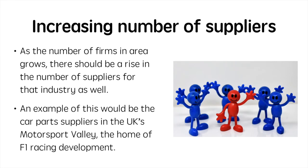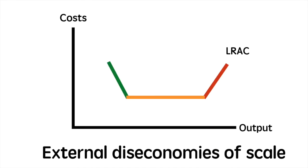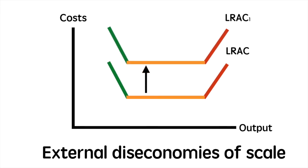Now we'll move on to external diseconomies. External diseconomies of scale have the opposite effect of external economies — they drive up average costs and thus force the LRAC to shift upwards. This is demonstrated by the shift from LRAC to LRAC1.